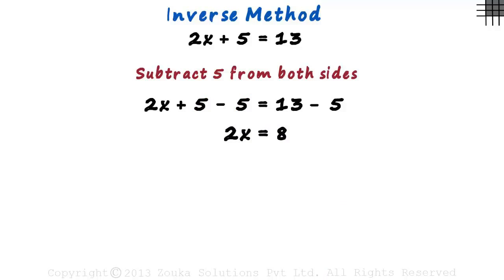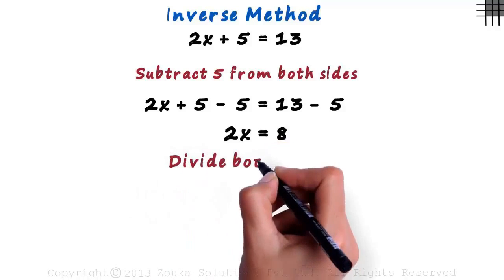Now, to have just the variable on the left-hand side, we have to eliminate its coefficient which is 2. So we can just divide the left-hand side by 2. And if we divide the left-hand side by 2, we have to divide the right-hand side also by 2. So we divide both sides by 2.